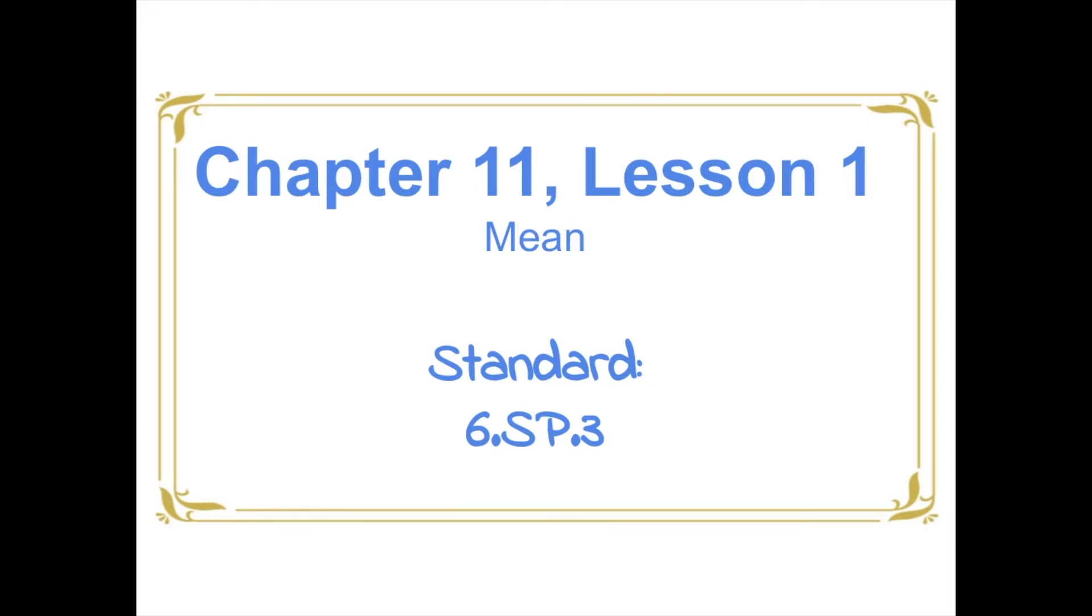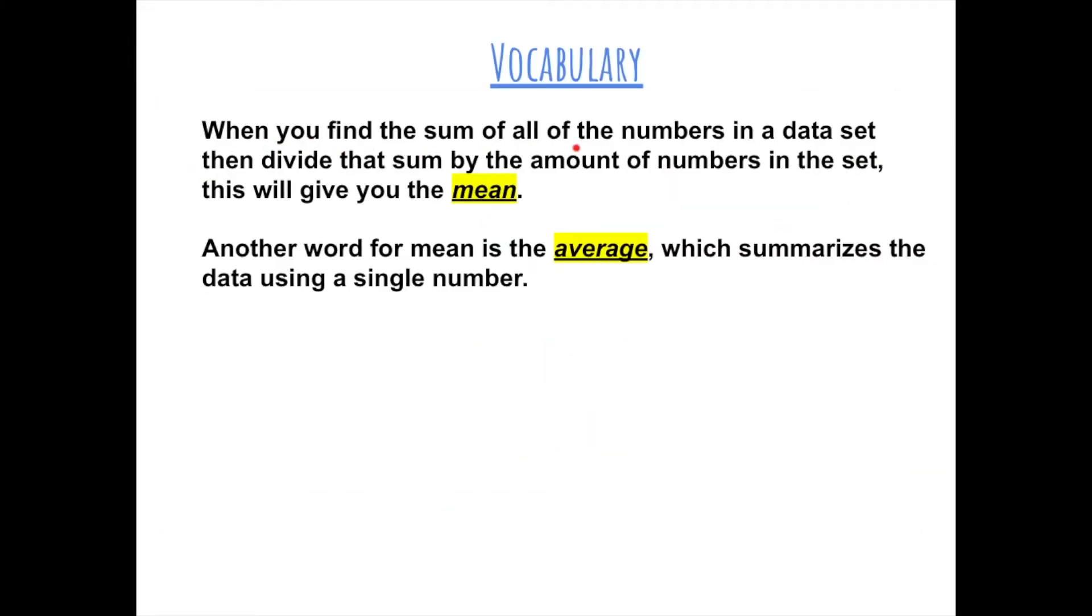Chapter 11, Lesson 1, Mean. Another word for mean is also average. When you find the sum of all of the numbers in a data set, then divide that sum by the amount of numbers in the set, this will give you the mean. The mean and the average summarizes the data using a single number.